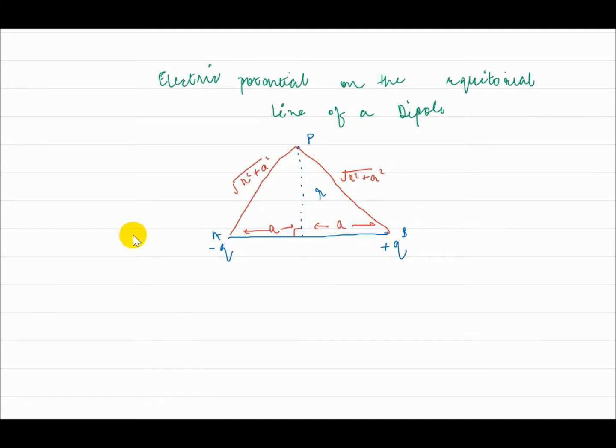Electric potential due to charge at A will be equal to kq upon the distance between A and P, that is under root r square plus a square. Similarly, for the charge at B,